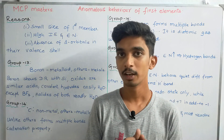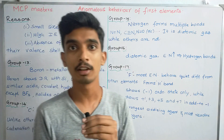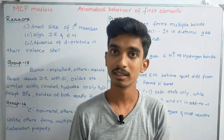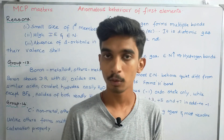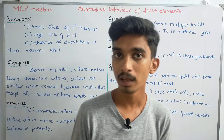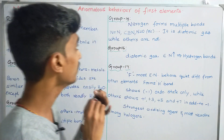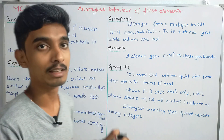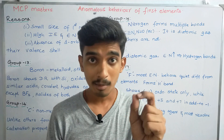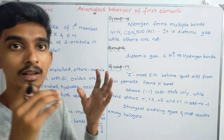Hi everyone. In this video we are going to talk about P-Block Elements, the next topic: Anomalous Behavior of First Elements. We are going to talk about ionization enthalpy and electronegativity. Anomalous means different behavior — for example, in a group, the first element behaves a little differently from the rest.